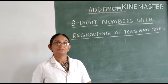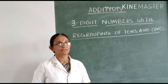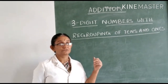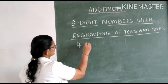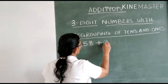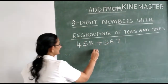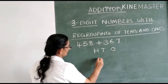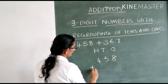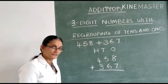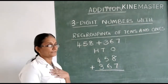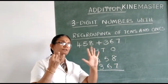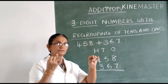So let me start. Now we will add the digits in the 1's place. So 8 plus 7 will give you 15. We keep 8 in mind and 7 in hand. After 8: 9, 10, 11, 12, 13, 14 and 15.